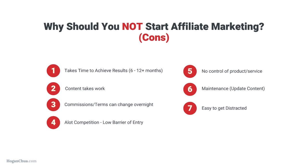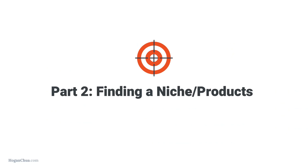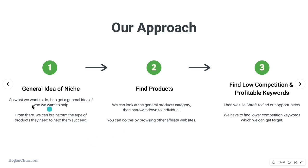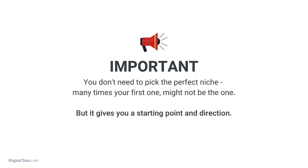With that said, I still think affiliate marketing is really amazing, especially if you're just starting with online business and want to make passive income. Now let's get into part two: finding a niche and finding products to promote. We need to find the general idea of the niche, then find the products, then find low competition and profitable keywords to target. You don't need to pick the perfect niche — your first one might not be the one, but you just need a starting point and direction.